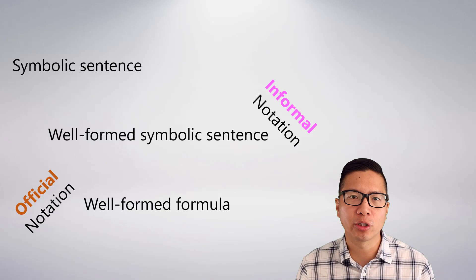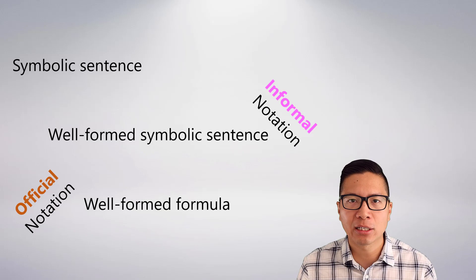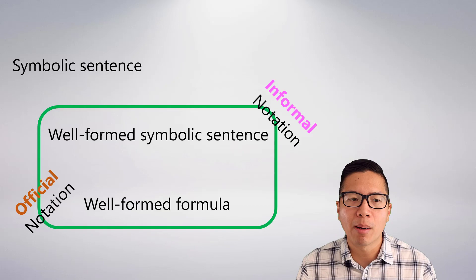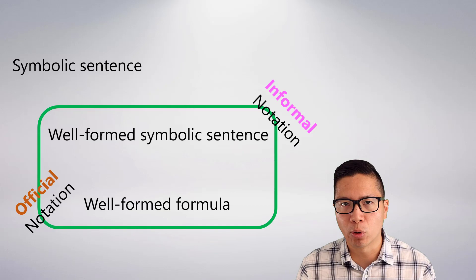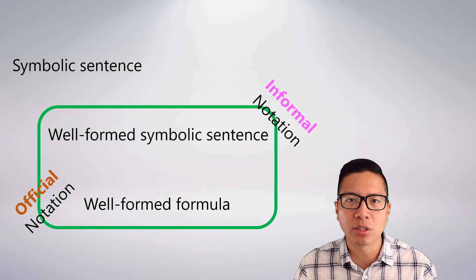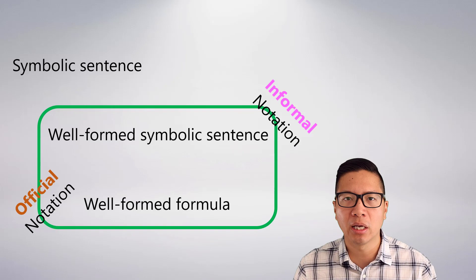We've covered informal notation in this video, which means we now know what a well-formed symbolic sentence is — basically a more relaxed version of a well-formed formula. We've covered both official notation and informal notation. When asked to generate symbolic statements in this course, you'll want something well-formed in either informal or official notation. For the most part, even though official notation makes finding the main connective easier, you will very quickly find yourself writing solely in informal notation — and that's actually how most people write symbolic logic.